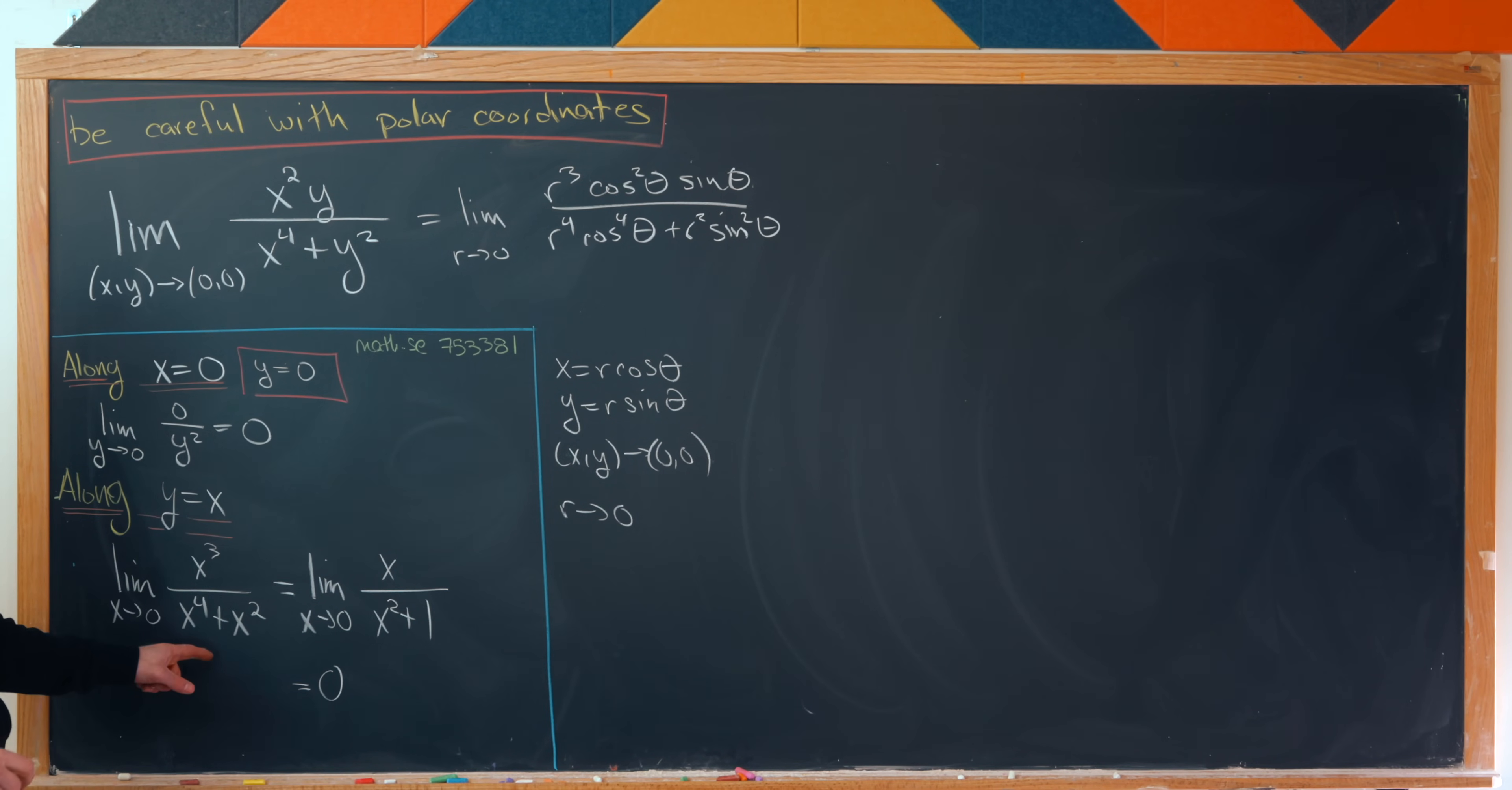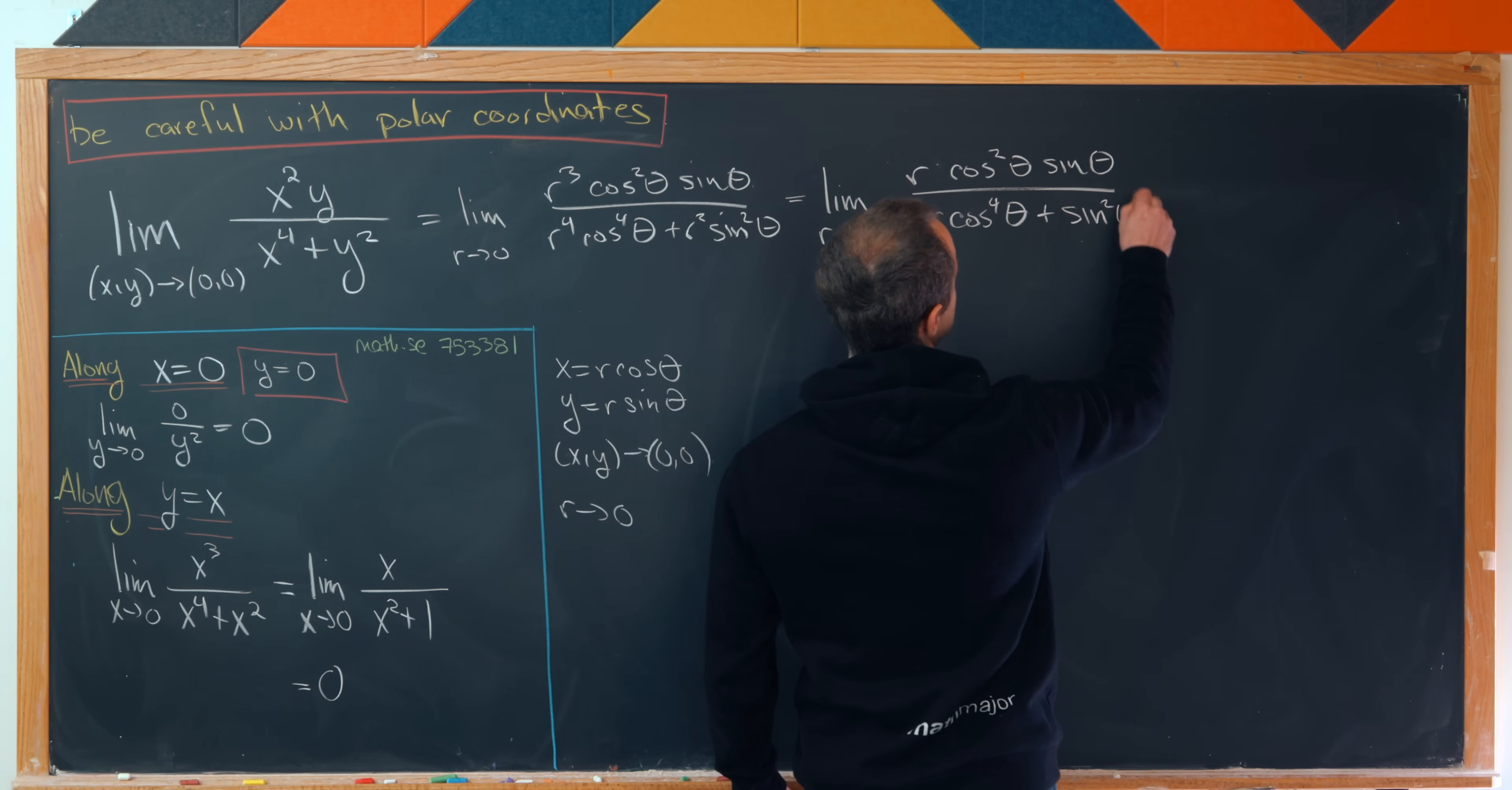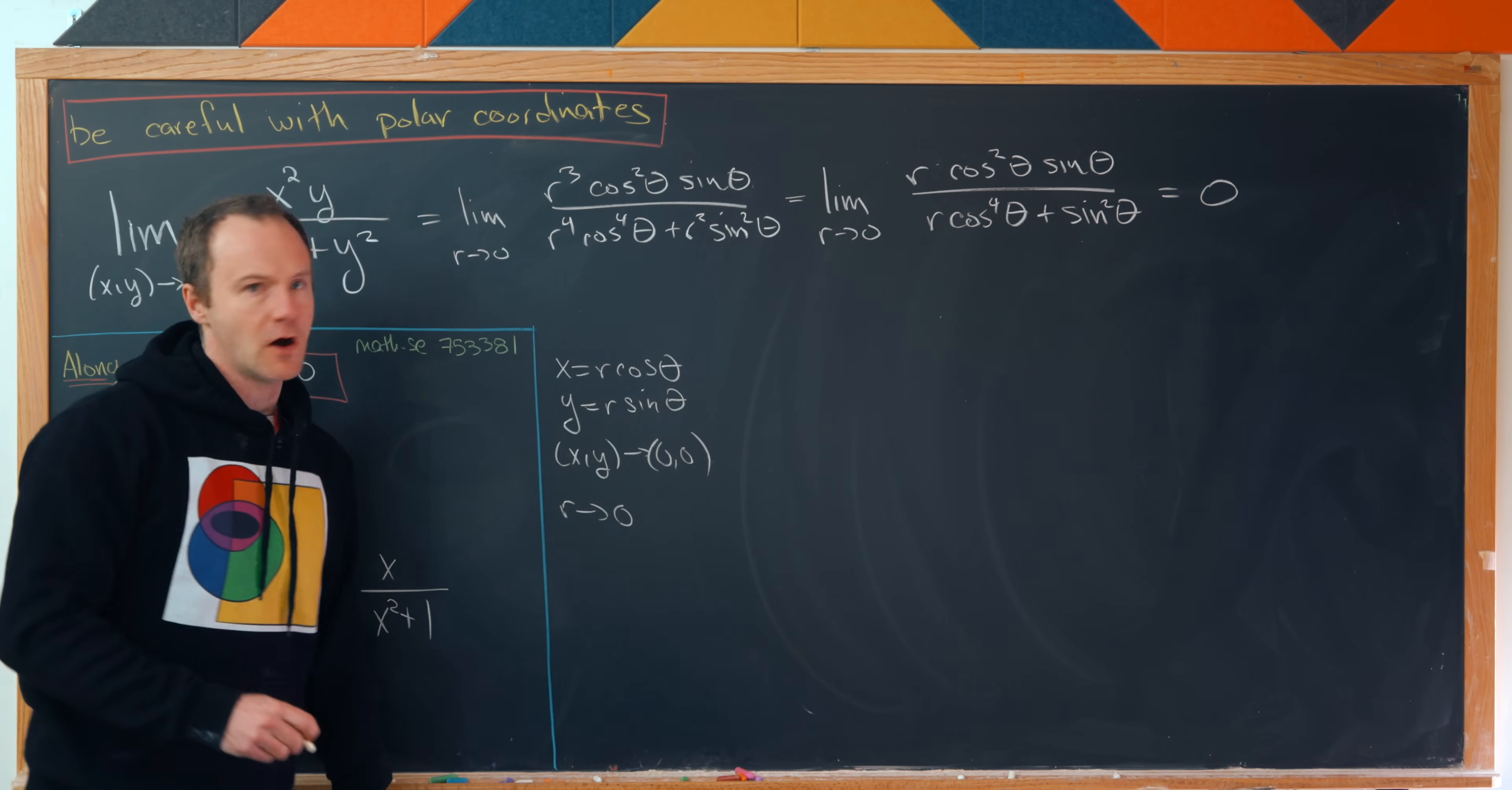And now just as we did right here, we can factor an r squared out of the denominator and cancel it with stuff that's happening in the numerator. And that'll leave us with the limit as r goes to zero of r times cosine squared theta times sine theta over r times cosine to the fourth theta plus sine squared theta. So we're left with something like that. But now notice as r approaches zero, we'll see that the numerator approaches zero while the denominator approaches sine squared theta. So in the end we'll see that the value here is zero.